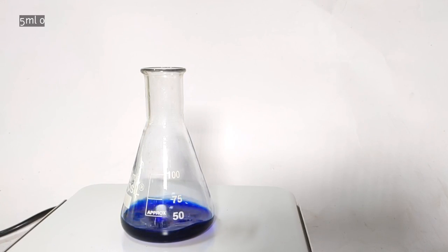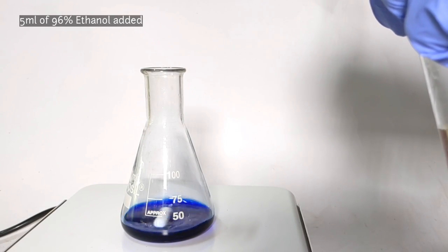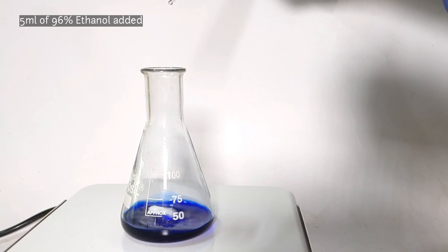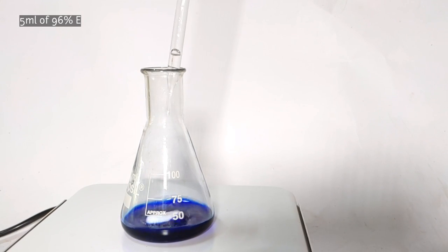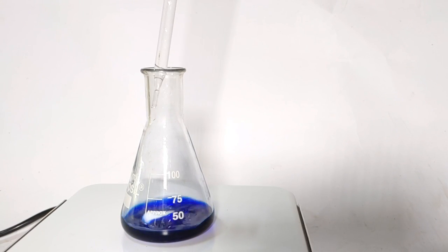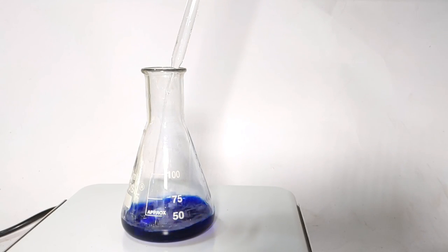From here, things change a bit. The literature tells us to add about 5 milliliters of 96% ethyl alcohol to the solution of tetramine copper sulfate. This would reduce the polarity of the media, causing the complex to crash out of the solution as micro-crystalline powdery product.